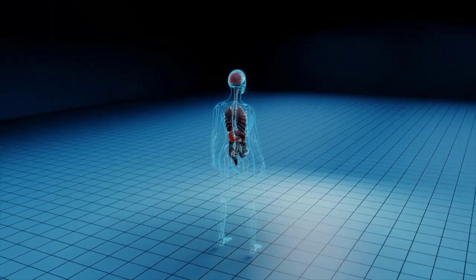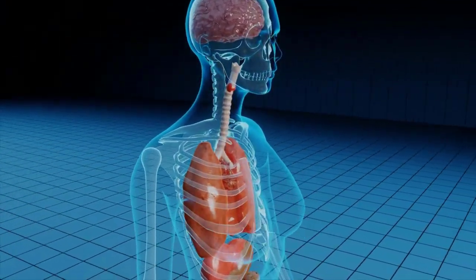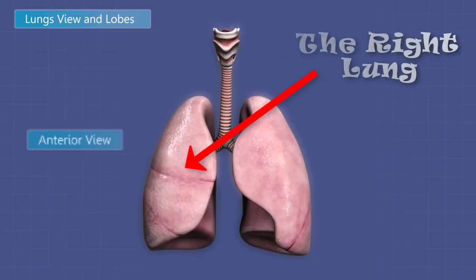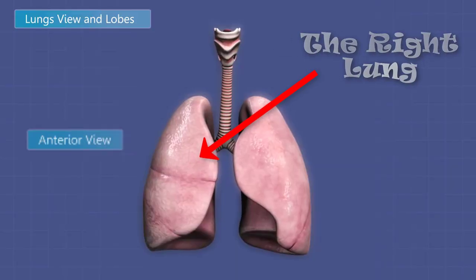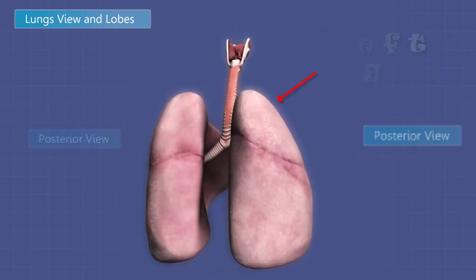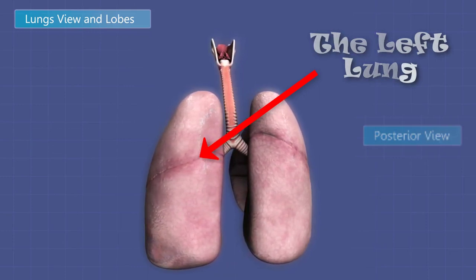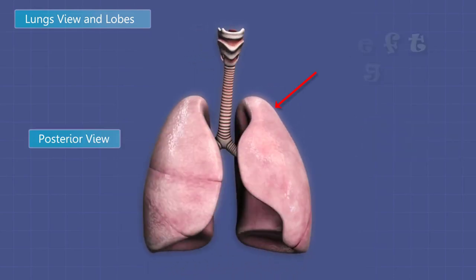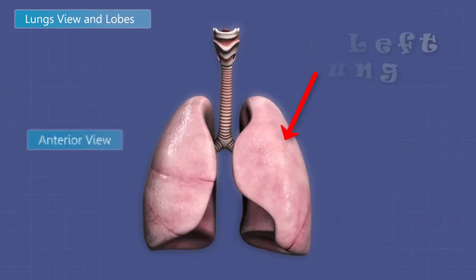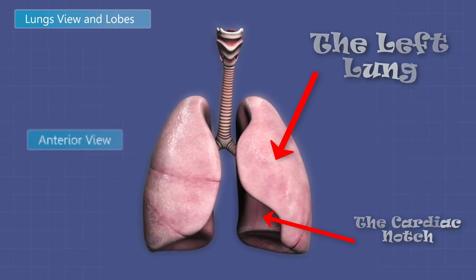Each lung is a somewhat conical organ, with a broad concave base resting on the diaphragm and a blunt peak called the apex that projects slightly above the clavicle. The right lung is shorter than the left because the liver raises up higher on the right side. The left lung, although taller, is narrower than the right because the heart tilts towards the left, occupying more space on that side. On the medial surface, the left lung has an indentation called the cardiac impression, where the heart presses against it. Part of this is visible anteriorly as a crescent-shaped cardiac notch in the margin of the lung.